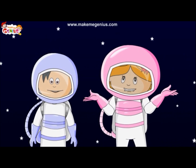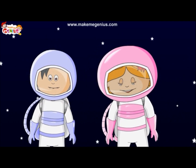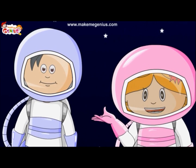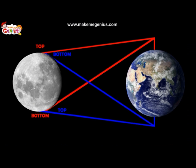Does everyone on the earth see all these phases at the same time? No. The phases are different in each hemisphere. The moon orbits near the equator of the earth, and in the northern hemisphere we are standing on the opposite side of the globe from countries in the southern hemisphere — we are upside down from each other. That is why we see the moon from a completely different vantage point from each other.